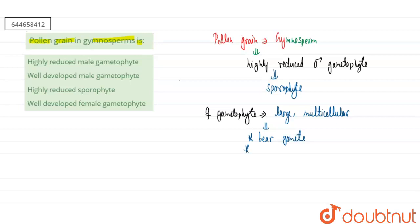And the second function is they will provide nourishment to the developing embryo. So the major functions will be bearing gametes and providing nourishment. So the correct answer will be the first option, that is pollen grain will be the highly reduced male gametophyte.